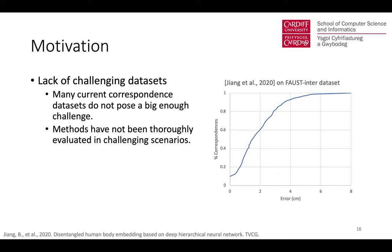What is the motivation? There are existing datasets for shape matching. Datasets such as TOSCA comprise isometric or near-isometric deformations, while the FAUST interperson dataset introduces challenging non-isometric and topological changes. However, state-of-the-art approaches now achieve excellent levels of accuracy on these, and improvements have become more incremental. Therefore, more challenging datasets can be useful for future development.